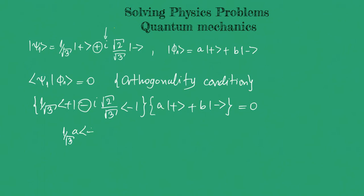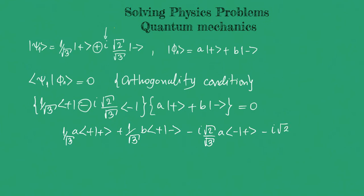Multiplying term by term, we have: (1/√3)·a·⟨+|+⟩ + (1/√3)·b·⟨+|−⟩ − (i√2/√3)·a·⟨−|+⟩ − (i√2/√3)·b·⟨−|−⟩ = 0.